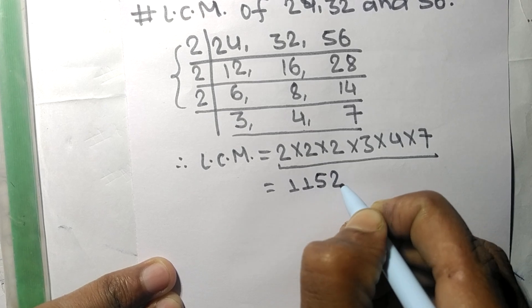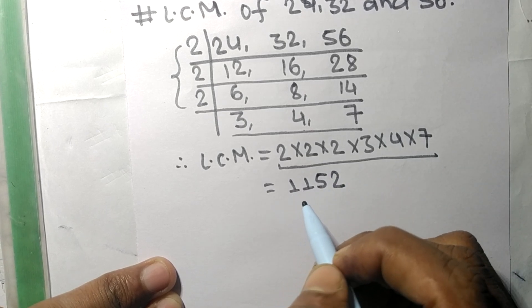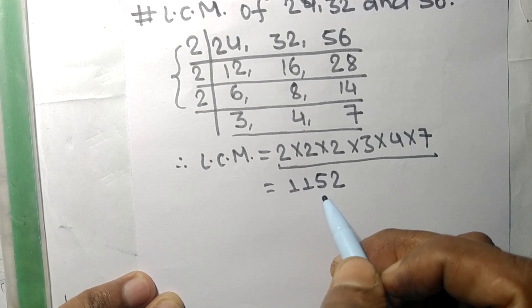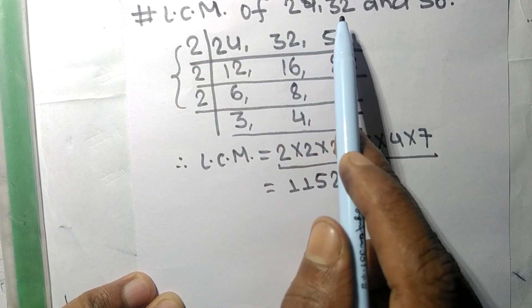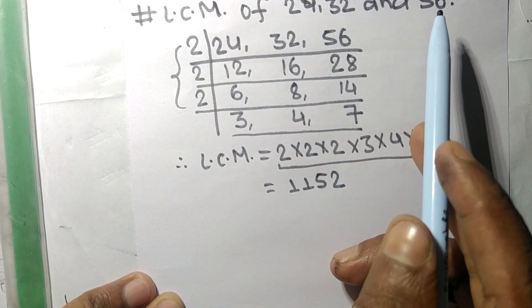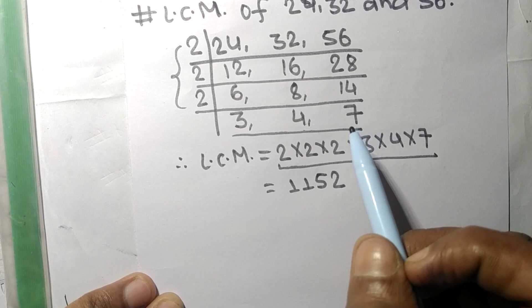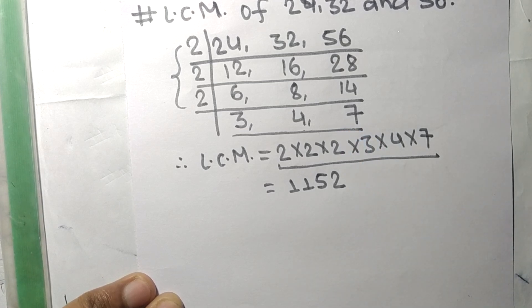So 1152 is the LCM of 24, 32, and 56. This much for today and thanks for watching.